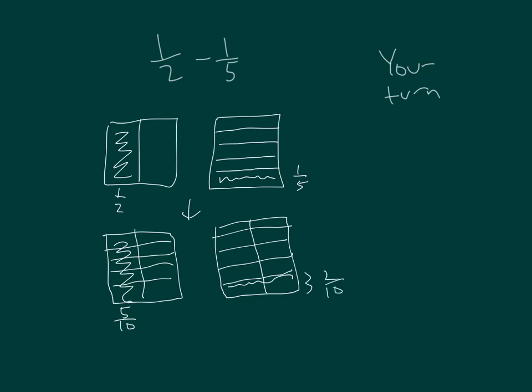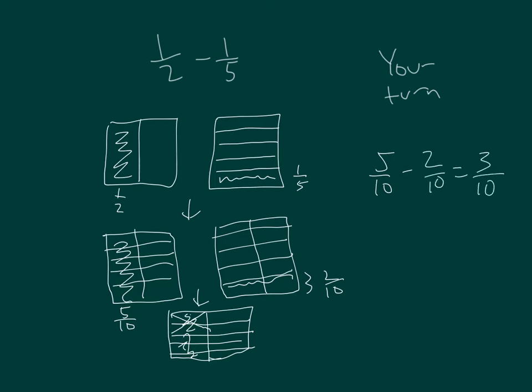So, I have 5 tenths minus 2 tenths. I indicate the minus 2 tenths by crossing them out. So, I have 5 tenths minus 2 tenths, which equals 3 tenths. Look over your work.